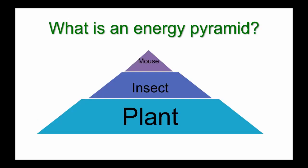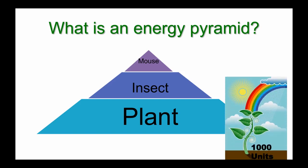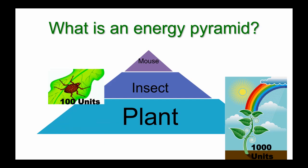An energy pyramid is a convenient way to show this relationship of energy loss at each level. You'd need a larger number of plants to support your first-level consumers, the insects, and those insects support an even smaller number of mice at the third level. If we start with 1,000 units of energy at the plant level, there would only be about 100 of those original units left for the insects to use at the second level.